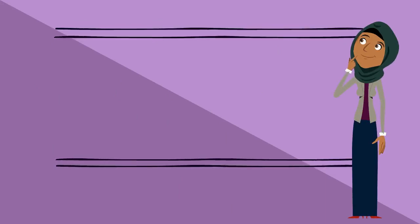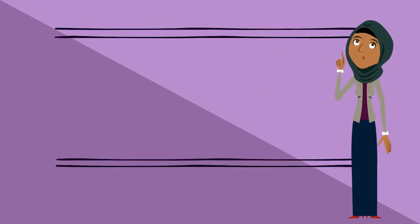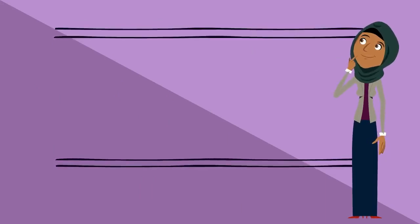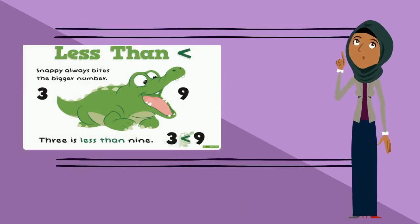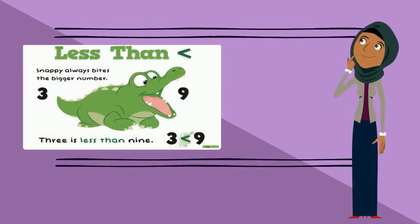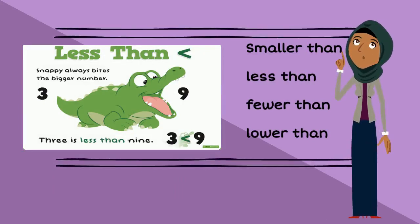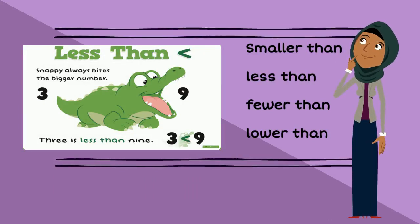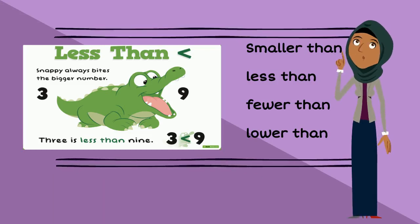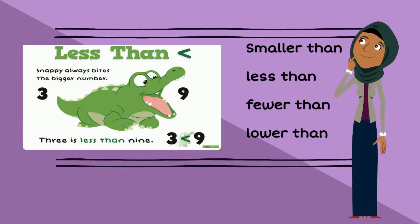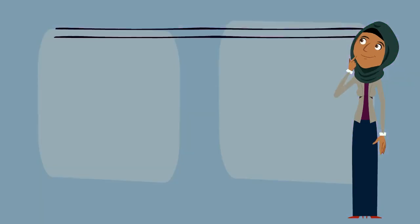The next symbol is less than. Remember, snappy the crocodile always bites the bigger number, so here we can say number 3 is less than number 9. The other words we can use are smaller than, less than, fewer than, or lower than.